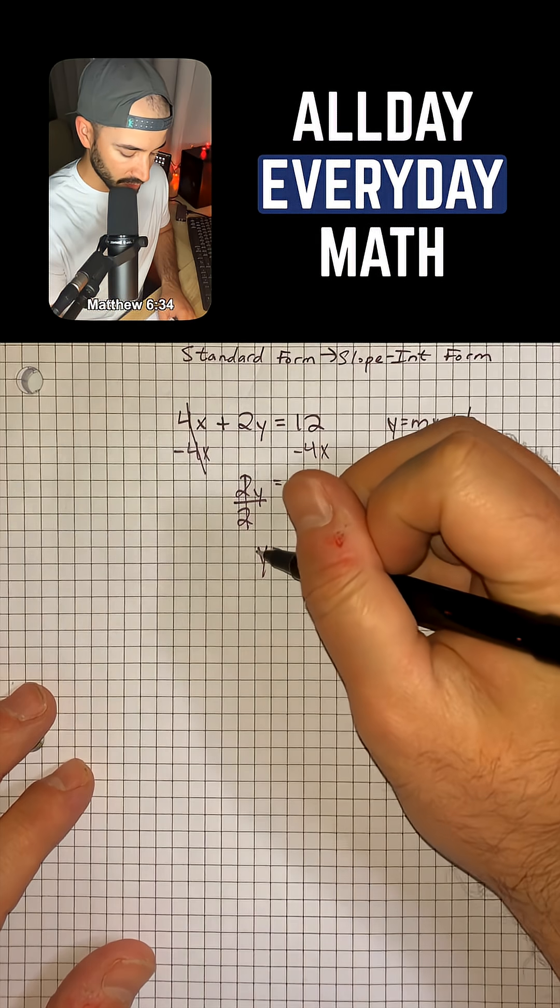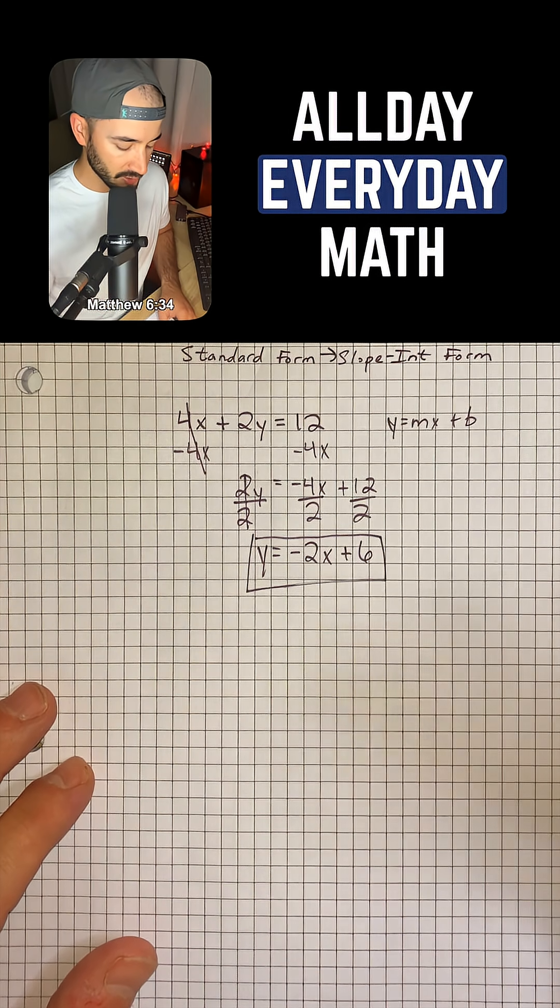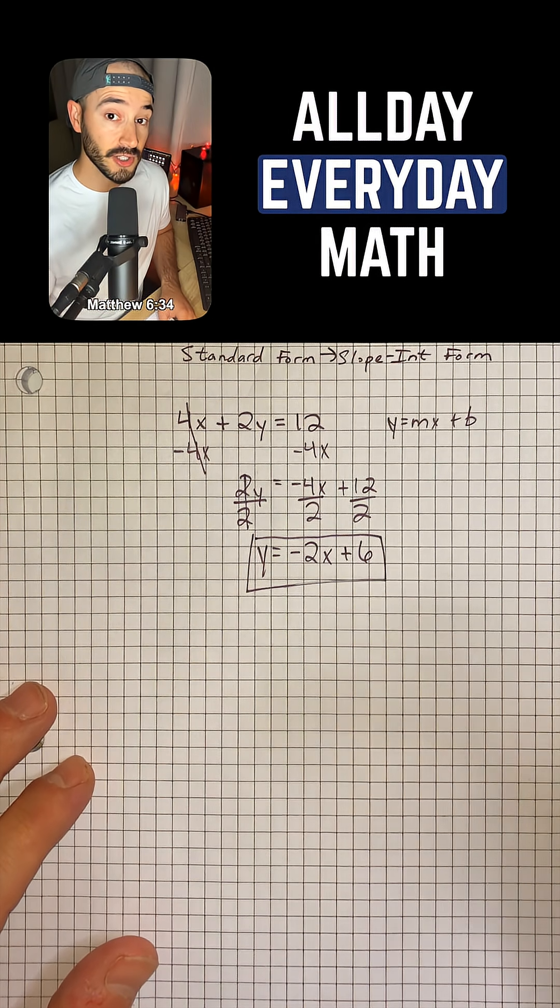So our new equation in slope intercept form would be y = -2x + 6, and that is all you have to do.